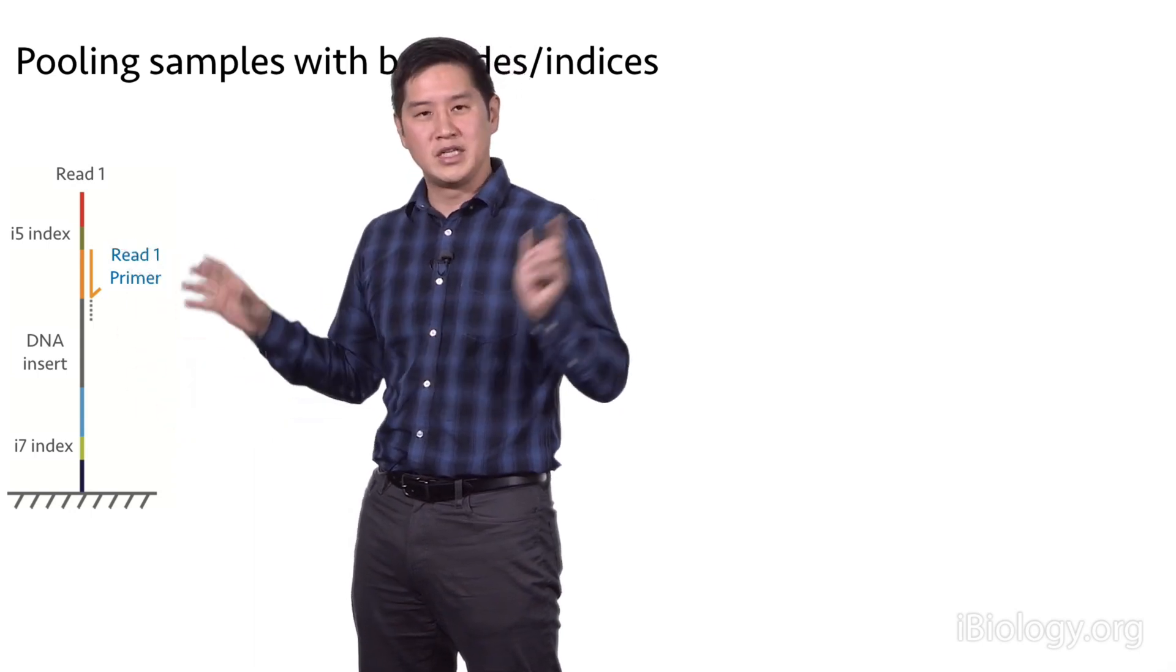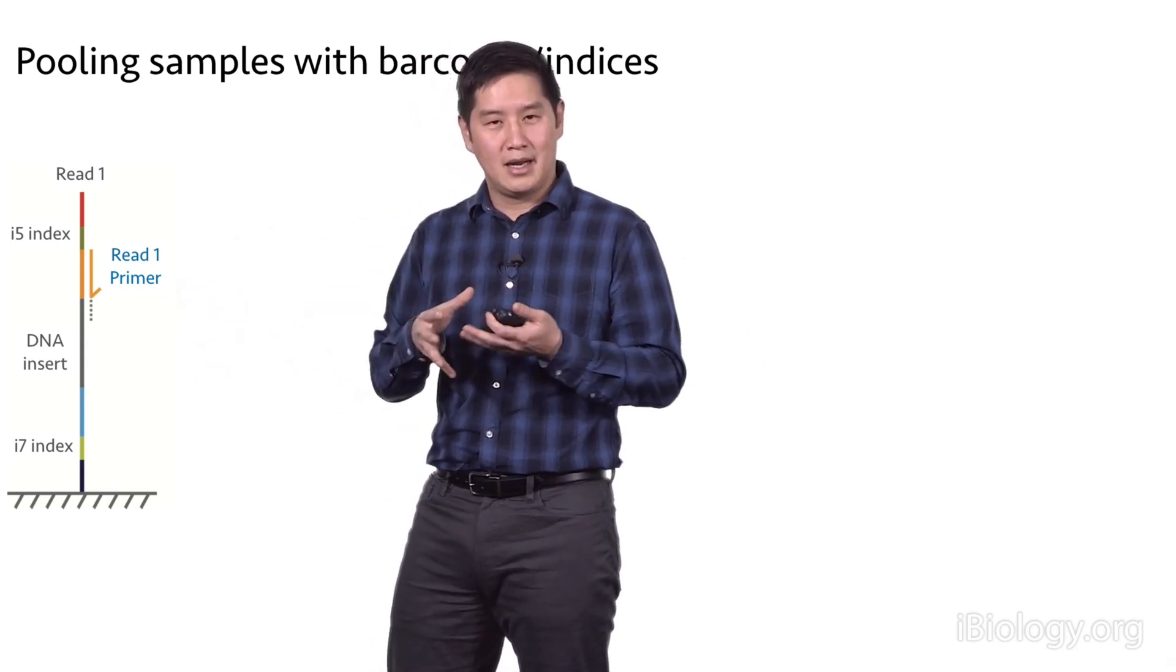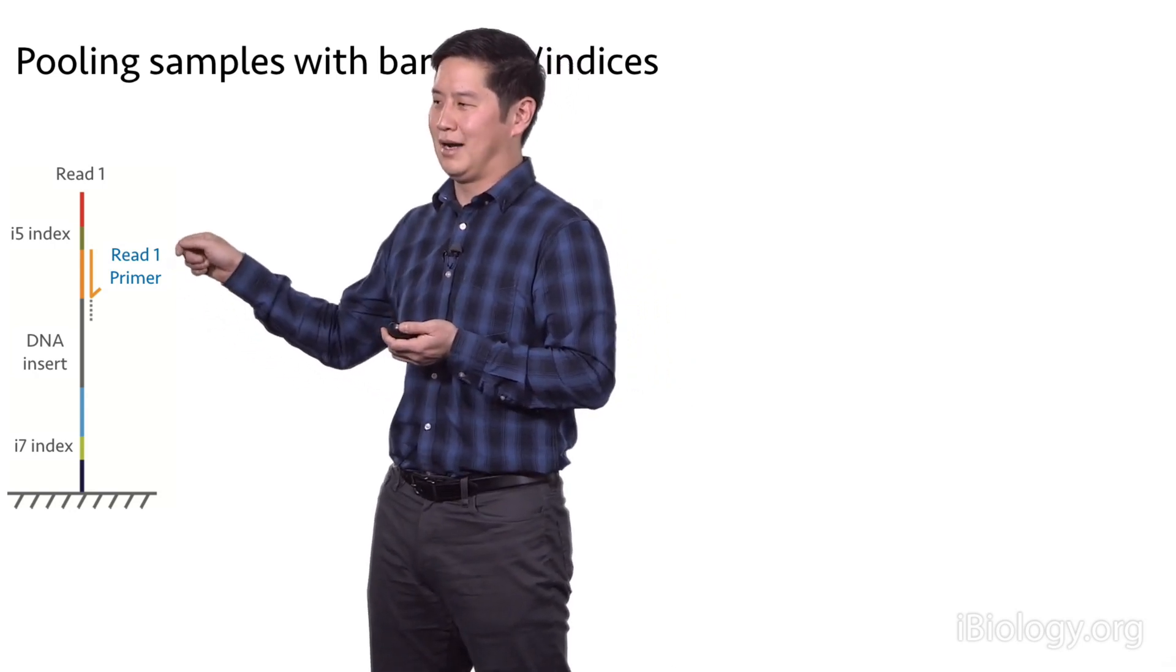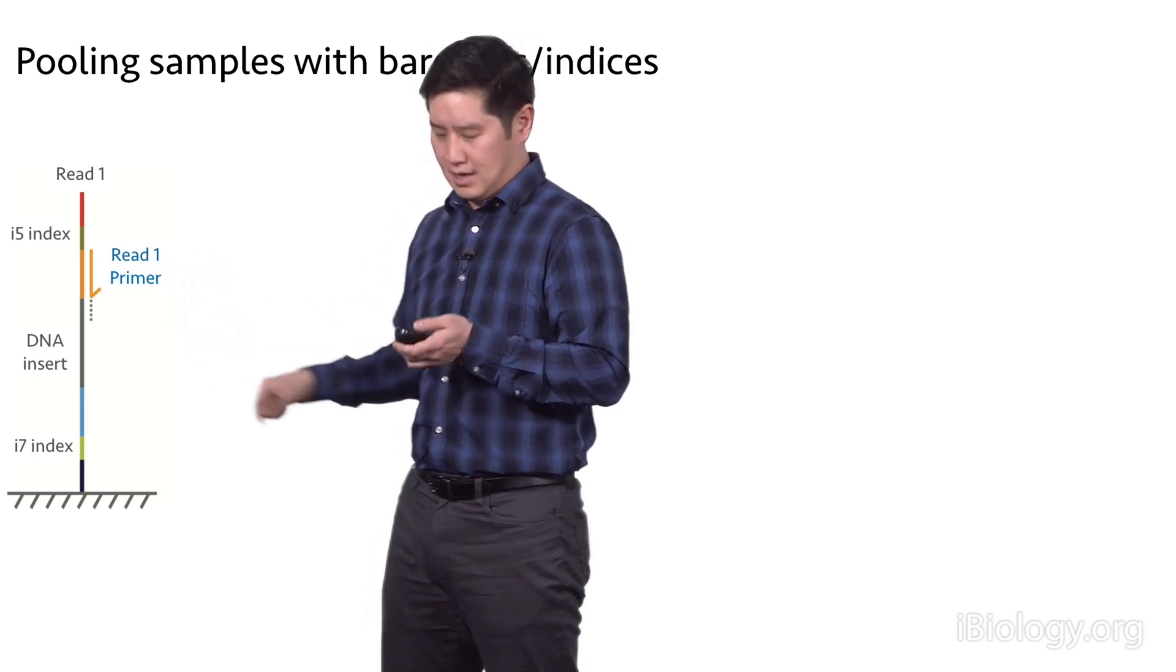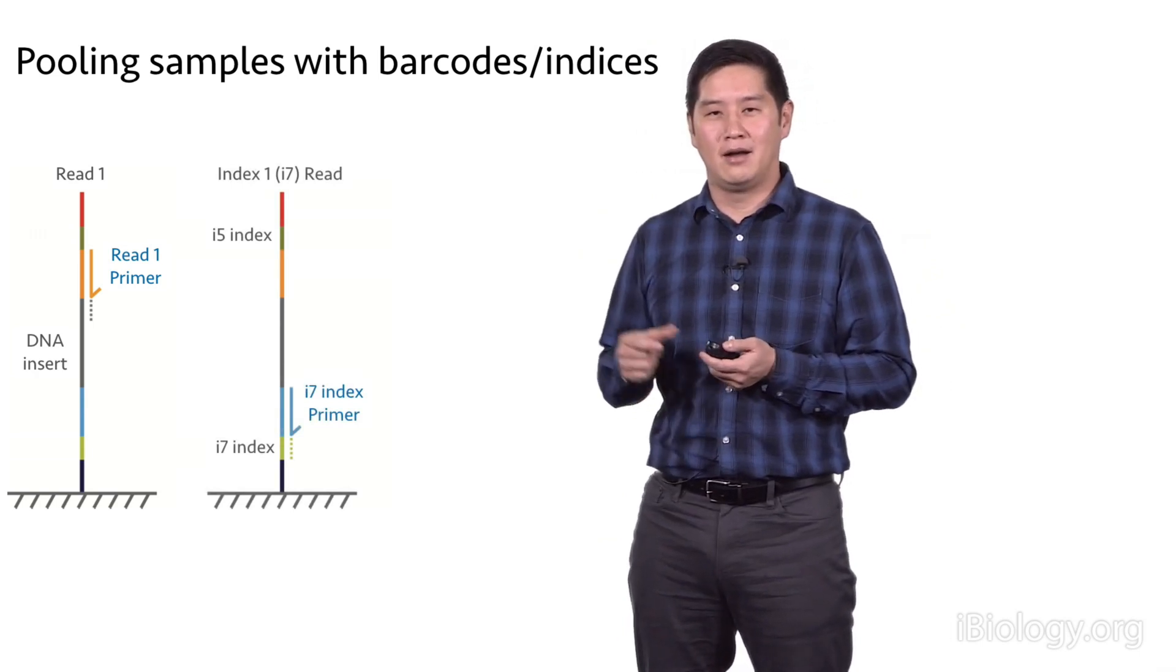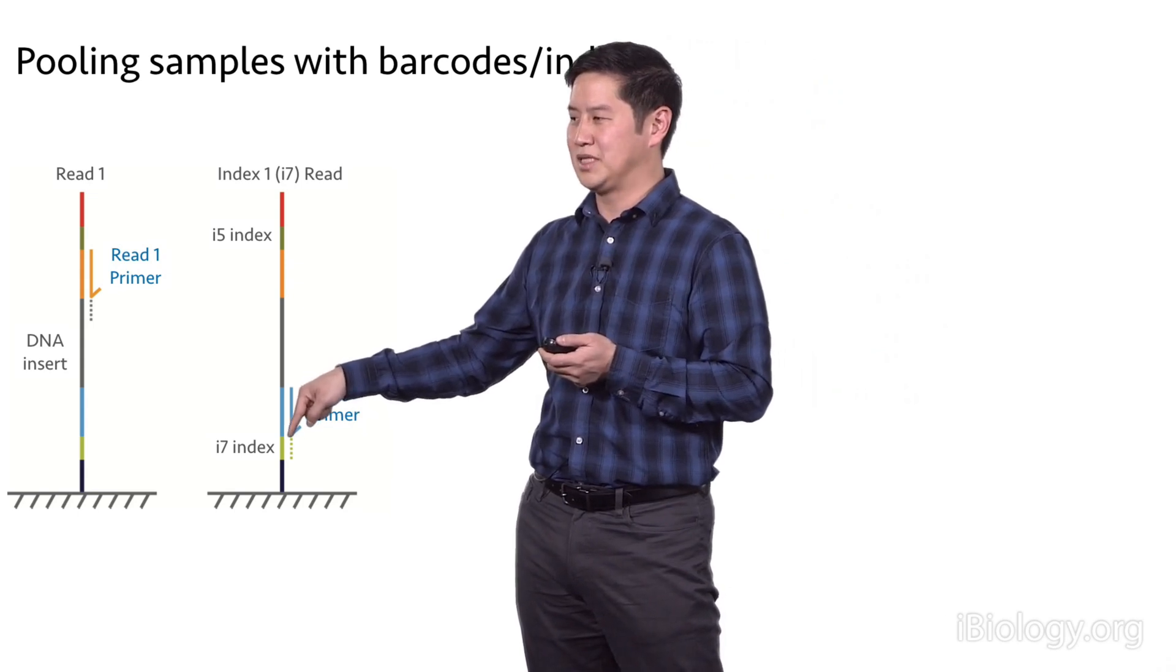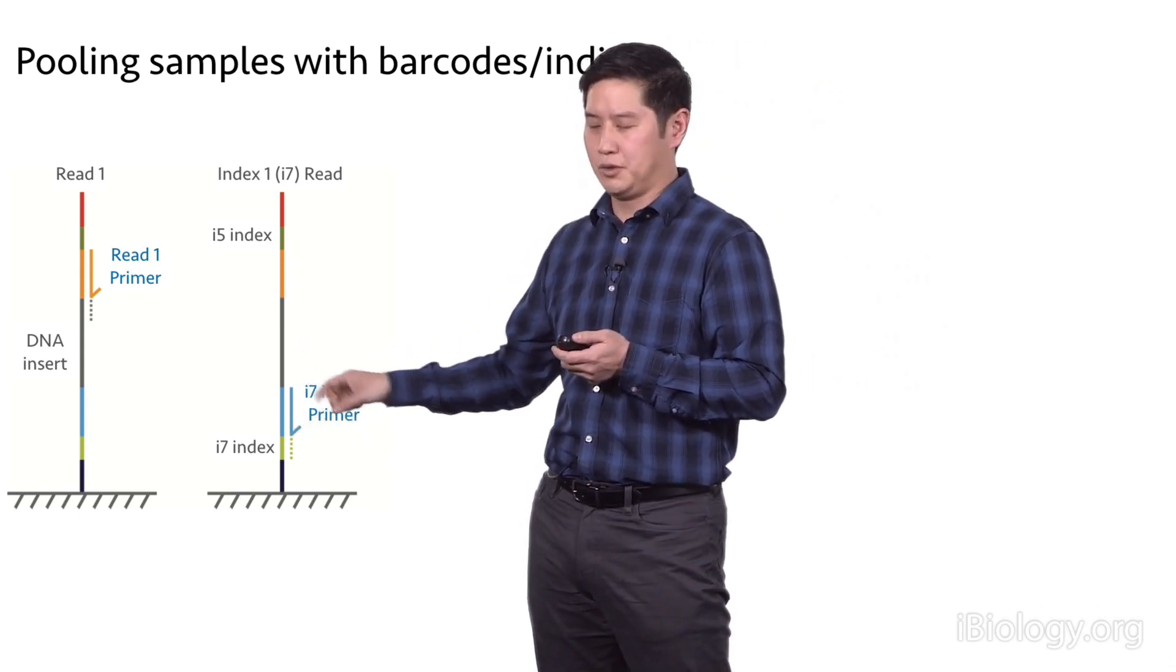These can be unique for each different sample that you prepare, and these can be pooled together and run on a single sequencing run. During the sequencing process, the first read that you do is the insert read for read one. After you've done that, you can strip that away and then add on a sequencing primer to read this i7 index. That'll hybridize on and then you can do a couple sequencing cycles so that you get the barcode sequence for this molecule.